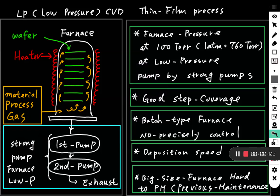We are talking about low pressure chemical vapor deposition. This is the furnace structure. We put a whole batch of wafers inside — many wafers to be a batch — and put them inside here to run the process. We use a heater around it to make it reach high temperature.